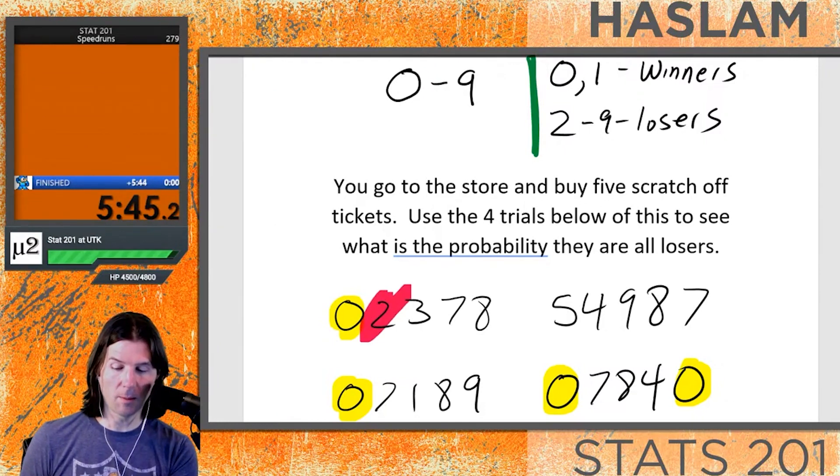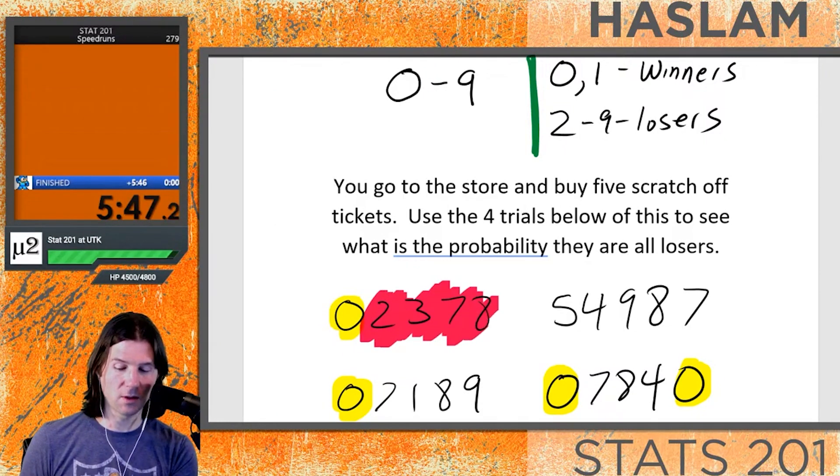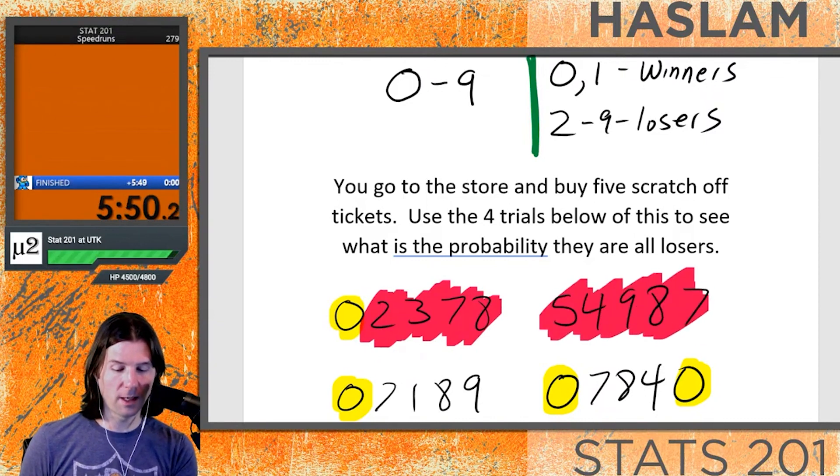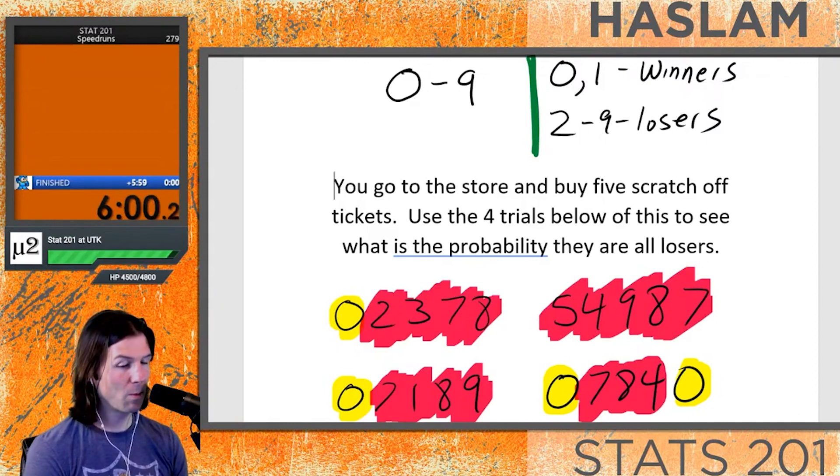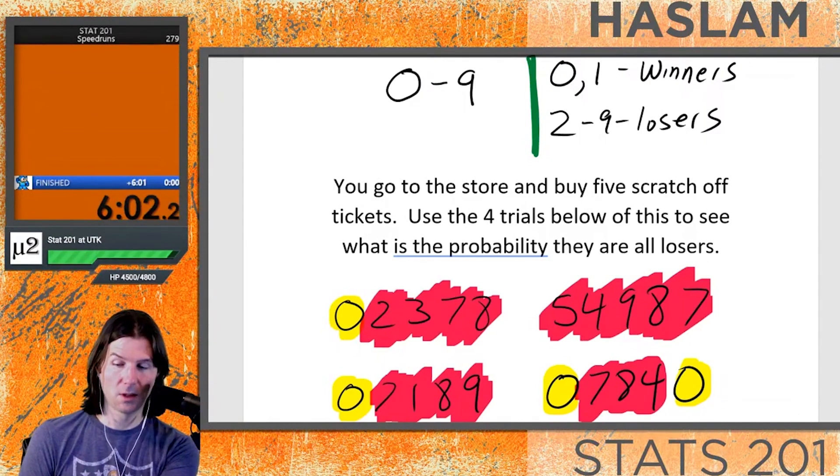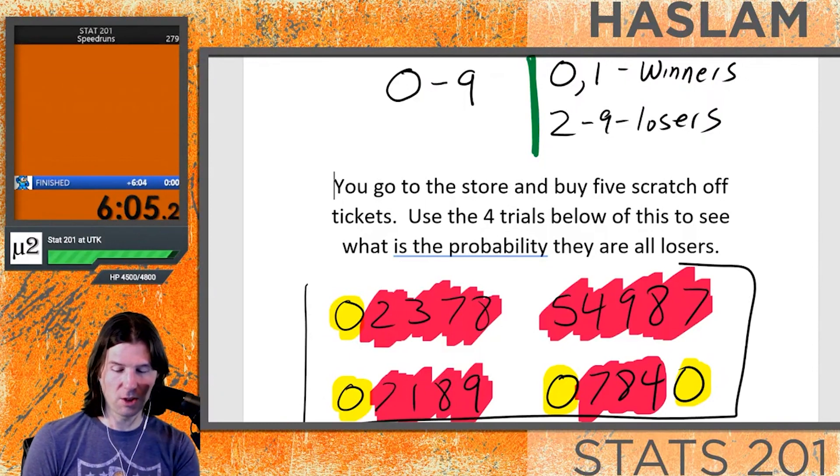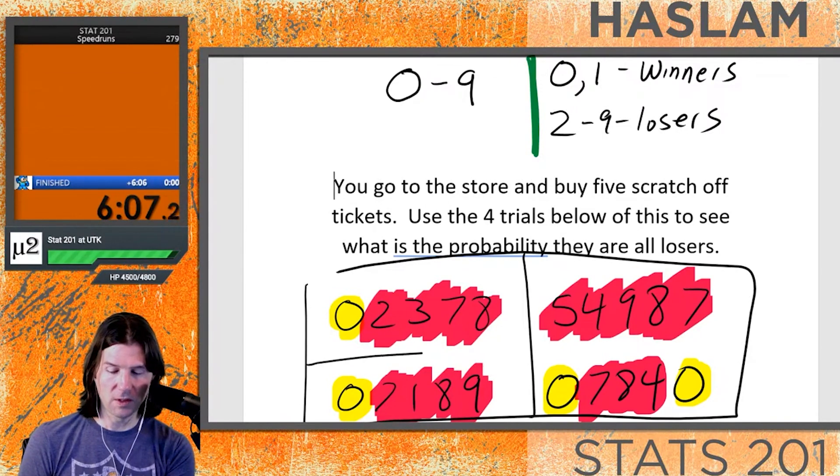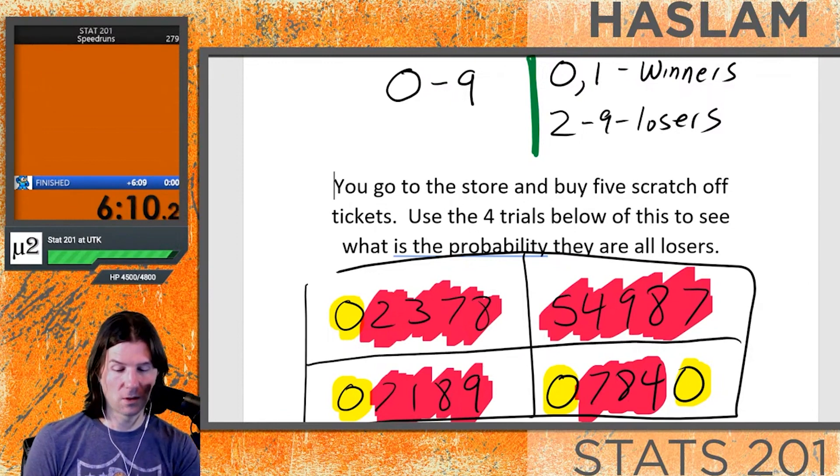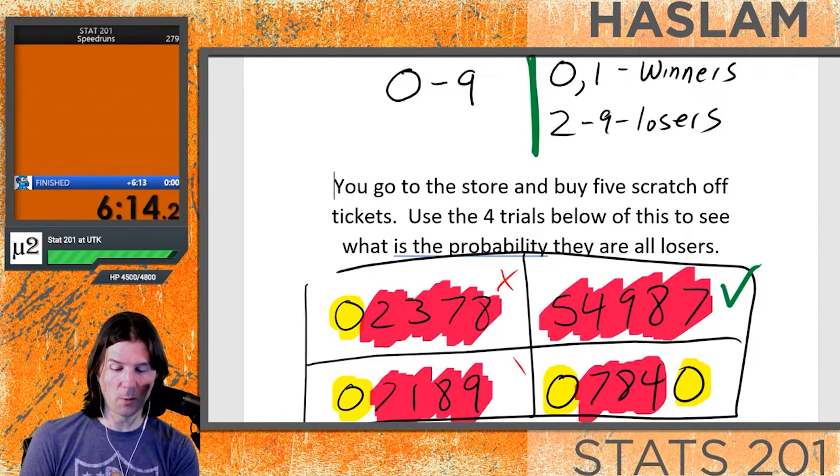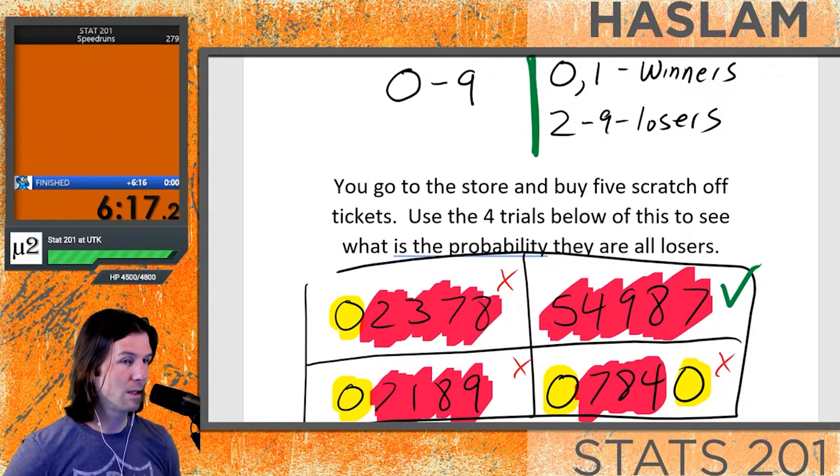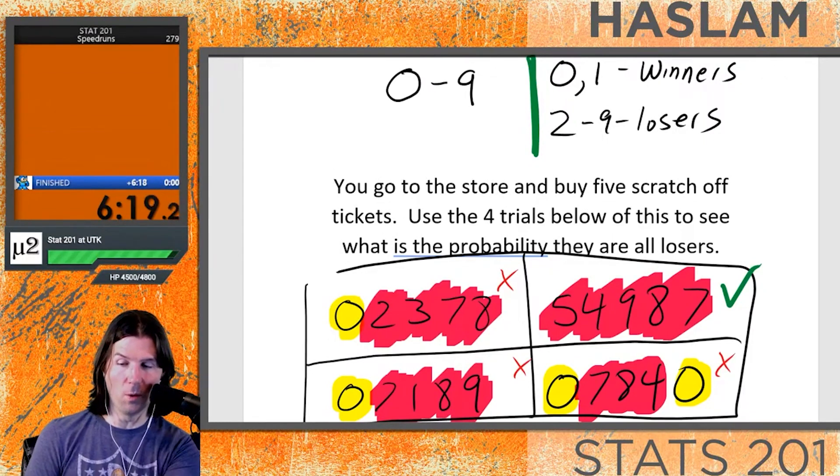Hopefully right now you're figuring out the probability and what this question would want for an answer. We've done four simulations below where we buy five lottery tickets. What is the probability that they're all losers? Taking a look at this, we would see one of the simulations right here. The other simulations have at least one winner. In this example, the probability is one over four.